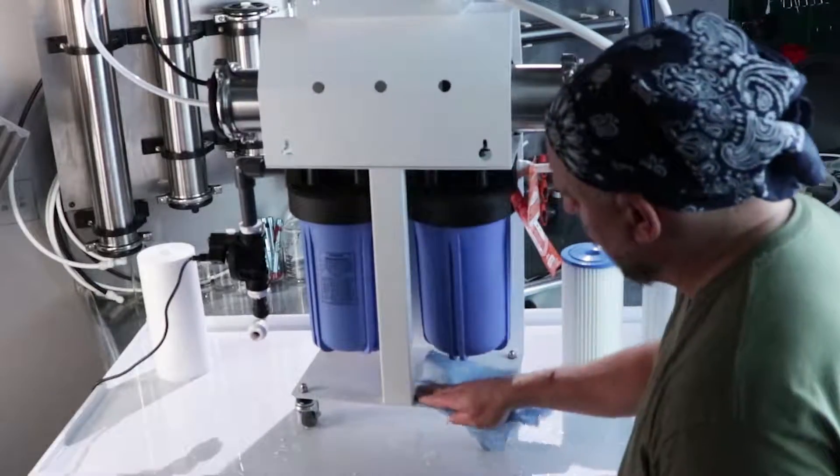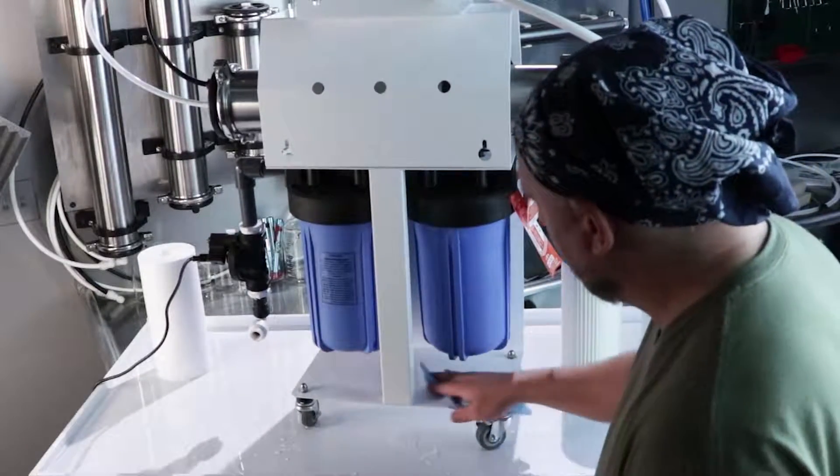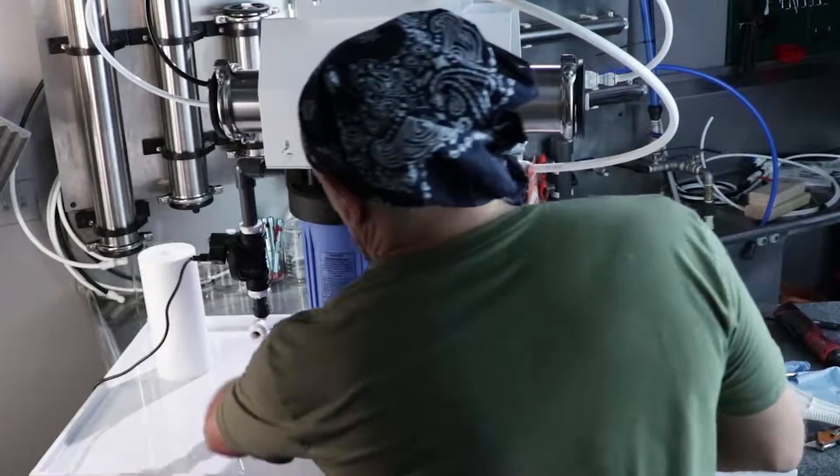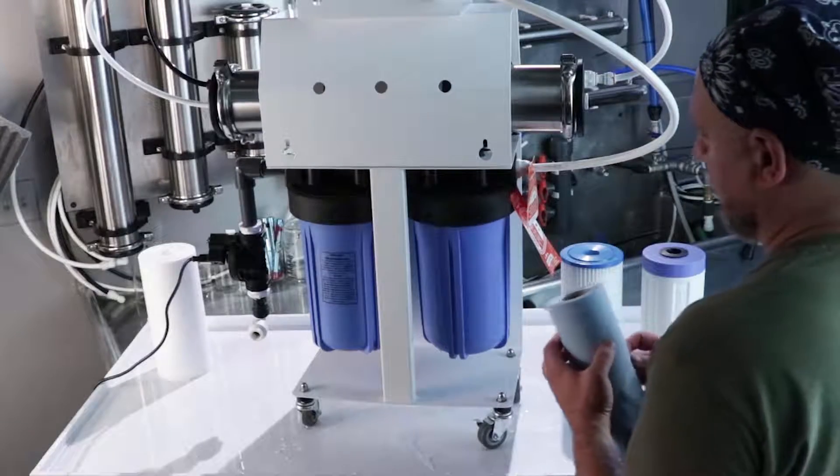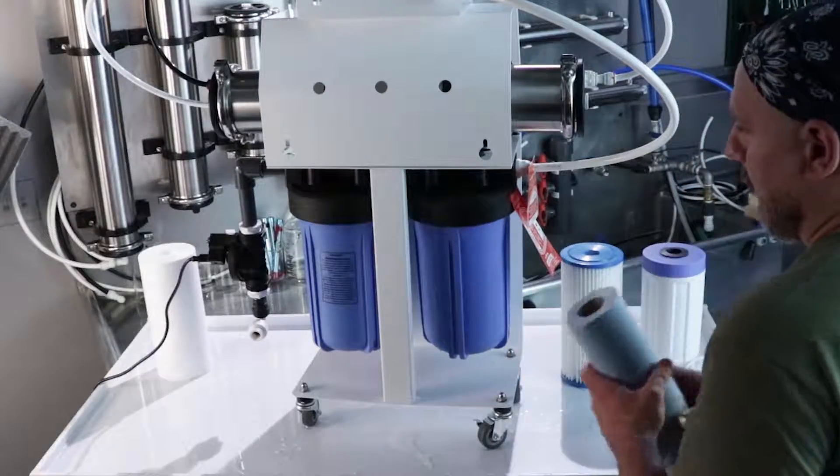Wipe away any excess water that's on the water filter itself. They are made of steel, so don't leave too much water sitting around on them. And that's it for changing the sediment and the carbon filter. Now we're going to move on to the membrane.